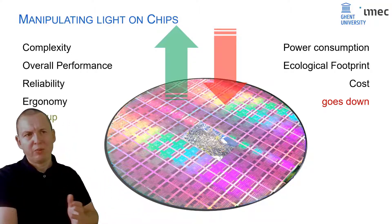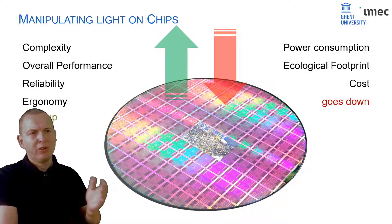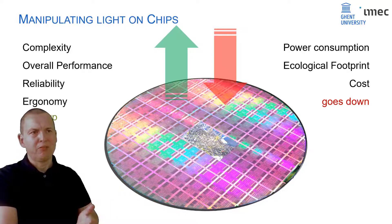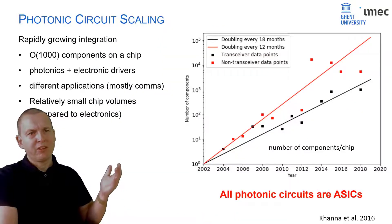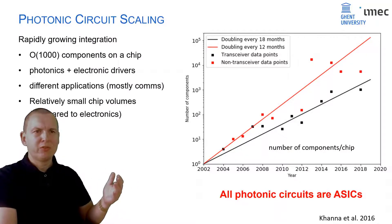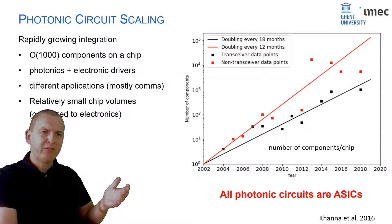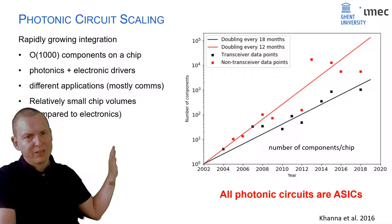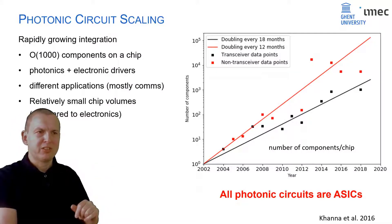When you bring a lot of functionality to the surface of a chip, you gain a lot in terms of complexity, power consumption, cost, etc. — and we've seen the same thing with electronics. If we look at photonic integrated circuits, this is a technology under development for the past three to four decades, and we see a kind of Moore's law for photonic integrated circuits — a doubling of the number of components on a chip roughly every 12 to 18 months.